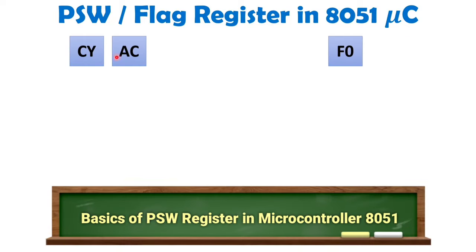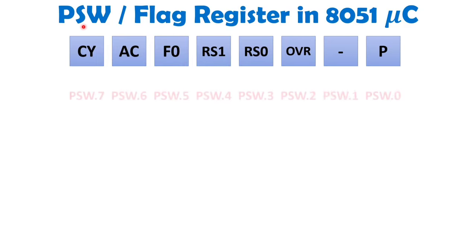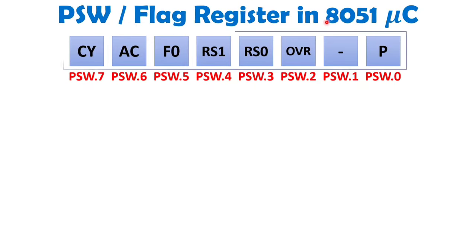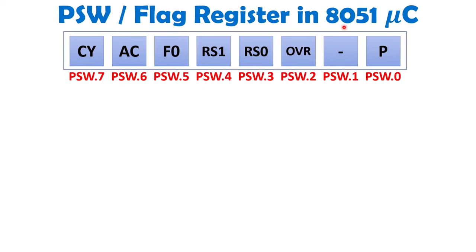When we talk about PSW, you should know it is the Program Status Word, also referred to as the flag register of 8051. The size of the flag register is 8 bits. One essential thing to know is that this PSW is bit-addressable, meaning a single bit can be addressed. For example, to address the carry flag, you use the address PSW.7.